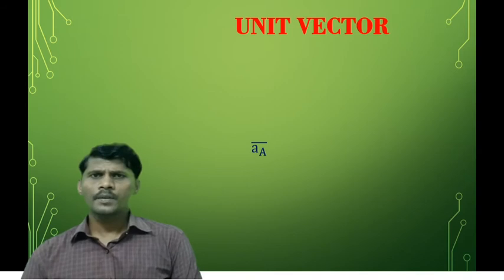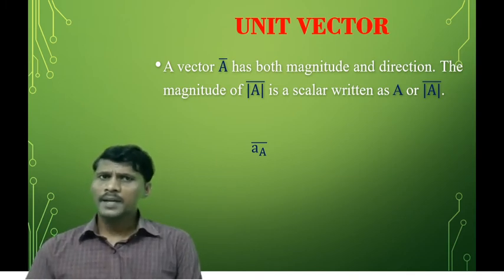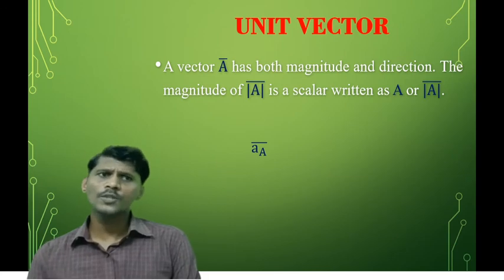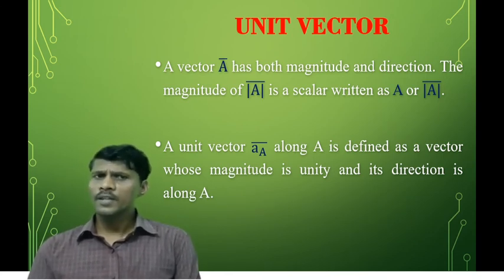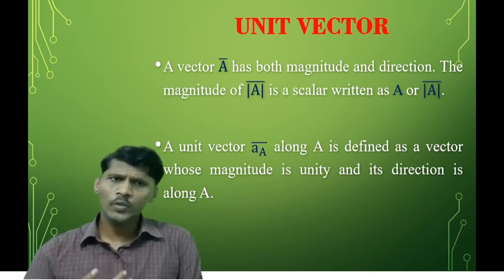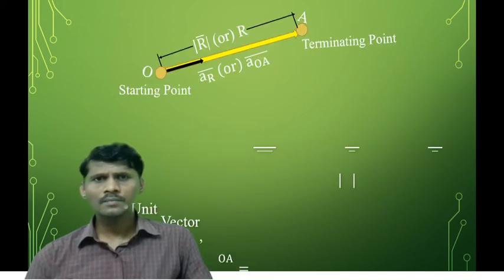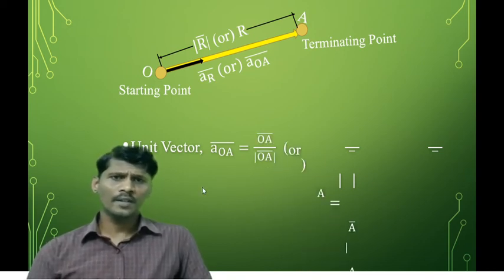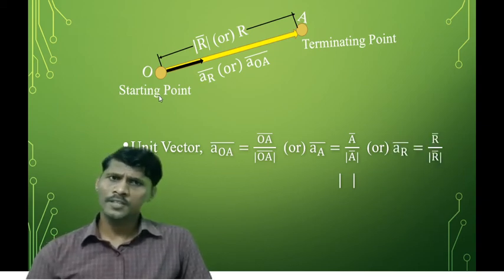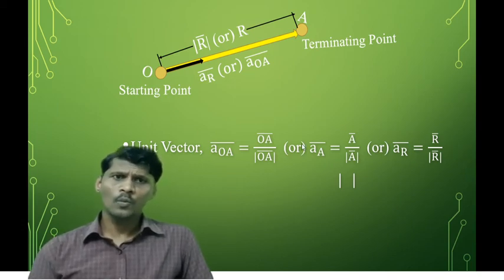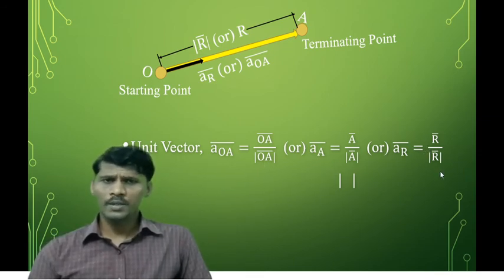Next, coming to unit vectors. A vector A-bar has both magnitude and direction. The magnitude of A-bar is a scalar quantity written as A or |A-bar|. A unit vector A-hat along A is defined as the vector whose magnitude is unity and whose direction is along A. So A_R-bar equals R-bar divided by the magnitude of R-bar.